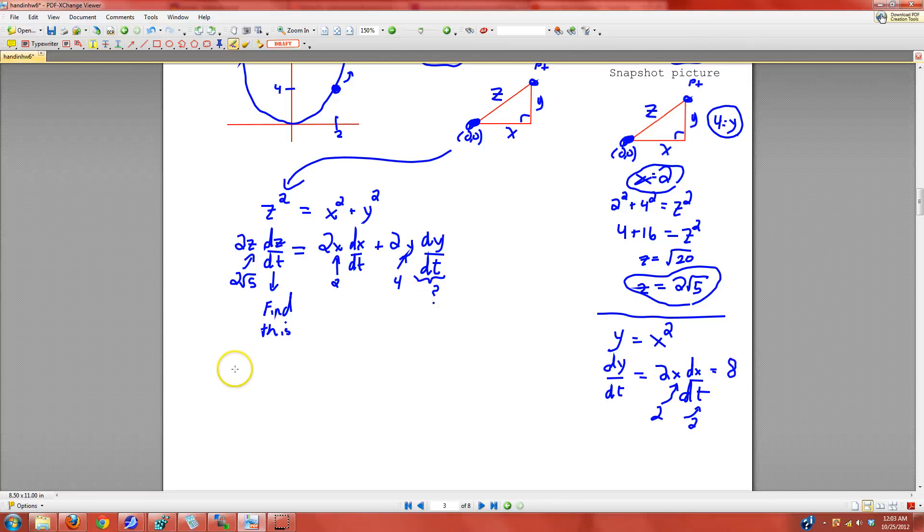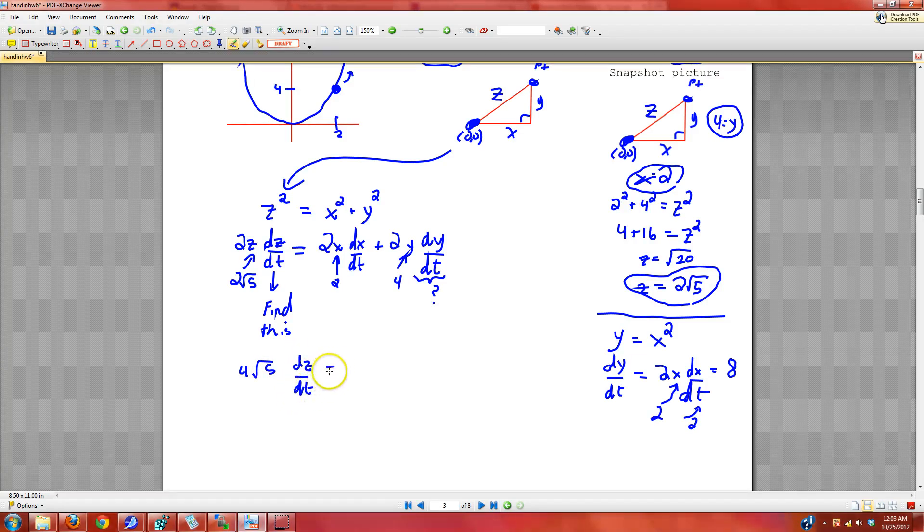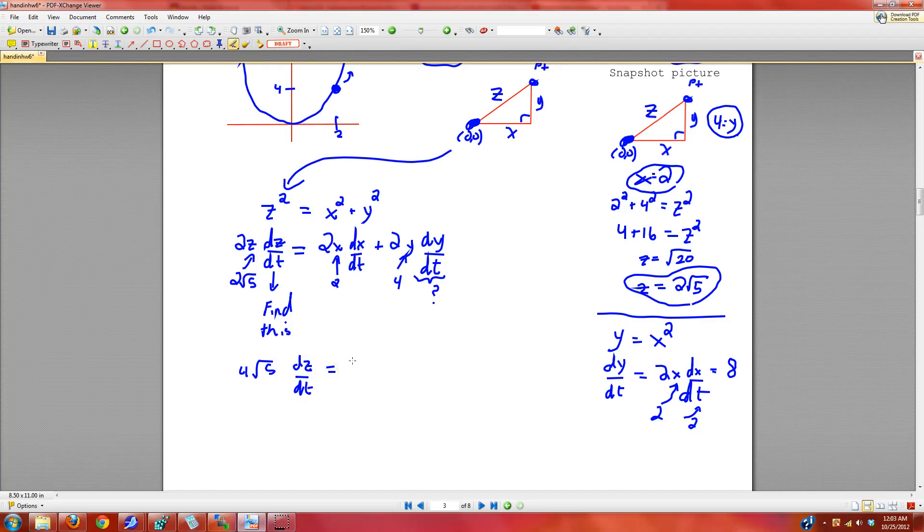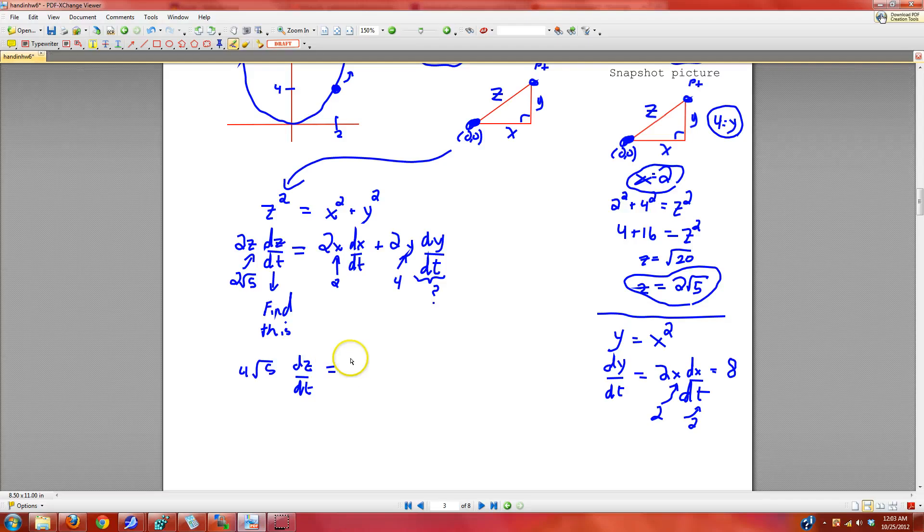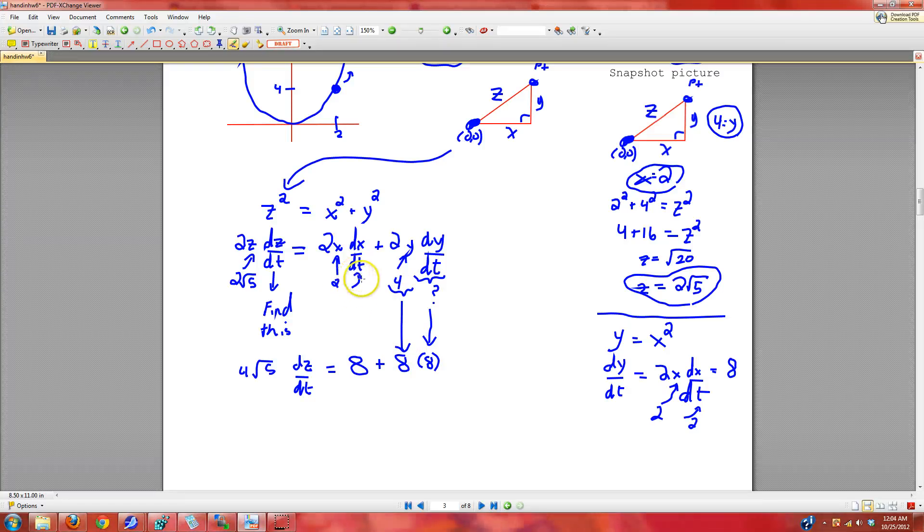Now it's no longer a mystery, and we have 4 root 5 dz dt is equal to 2 times 2 times 2, that's 8, plus dy dt is 8. 2 times 4 is another 8, and dx dt is also 2. That's 64, 64 and 8 is 72. Take that 72 and divide by 4 root 5.